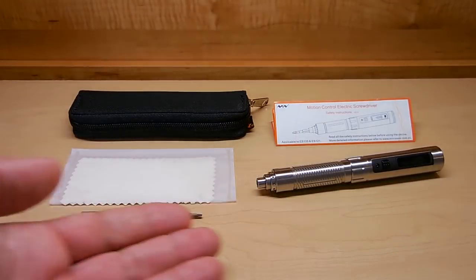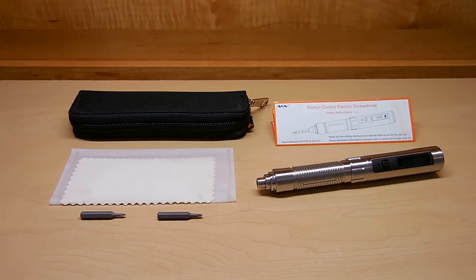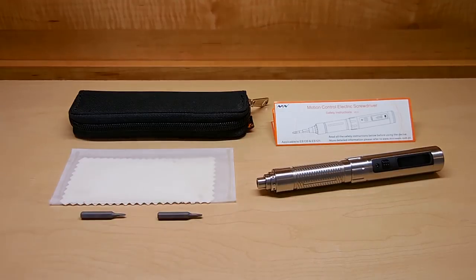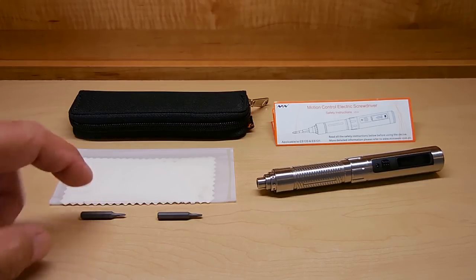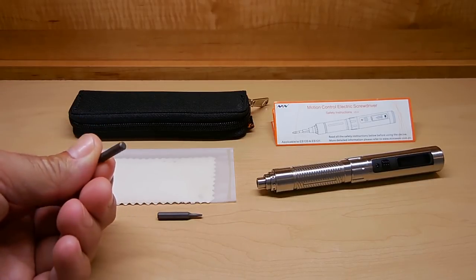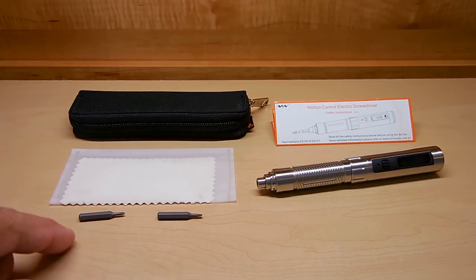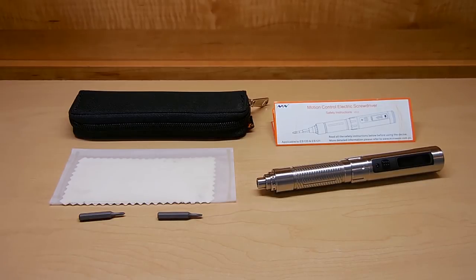Okay, everything's been removed from the box. You're looking at the contents of that box. You have the instruction manual, the electric motion control screwdriver. Over here are two four millimeter tips. Four millimeter hex is referring to the end that goes inside the tool. If you want additional tips they're very inexpensive and I'll post a link in the video description area.